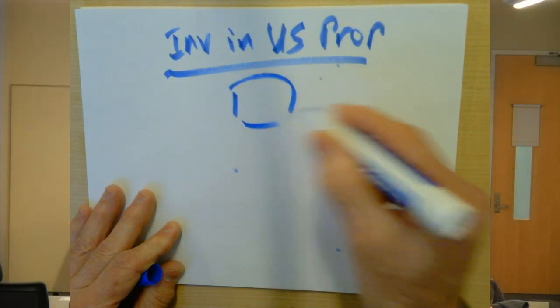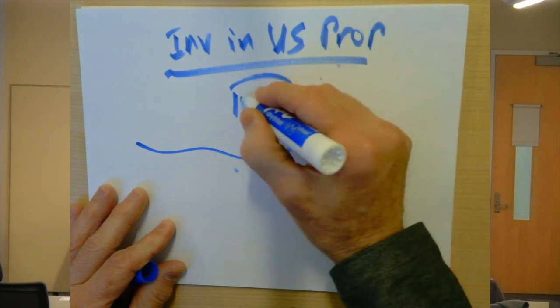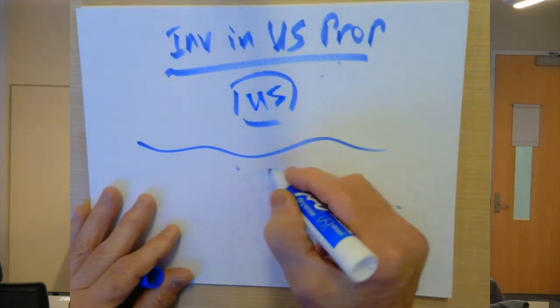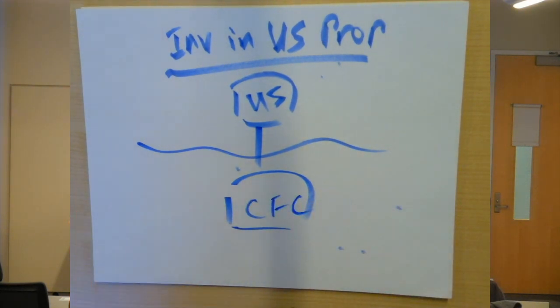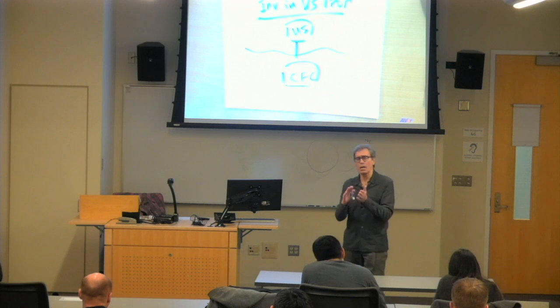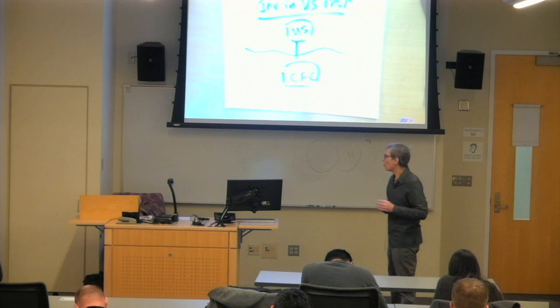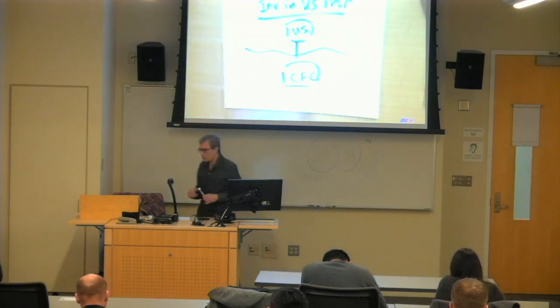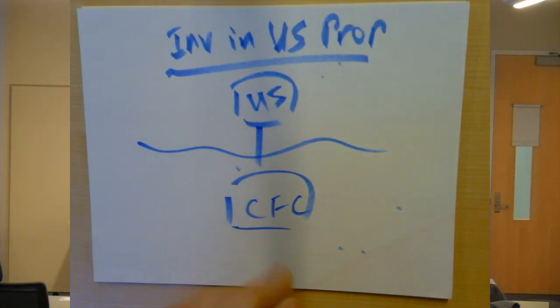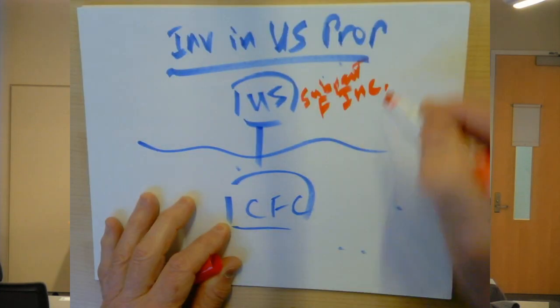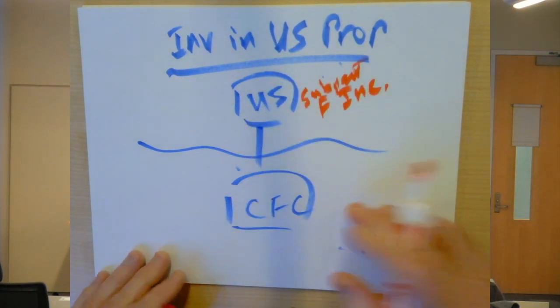When we look at our usual situation of a U.S. parent owning a CFC, let's think back to what we spoke about last week when we talked about previously taxed income. We said that to the extent that there is a subpart F inclusion up here, to the extent there is an inclusion at the U.S. company level, that creates...